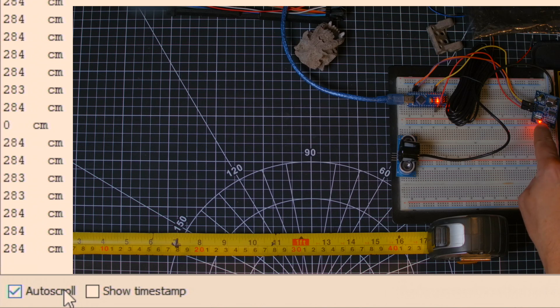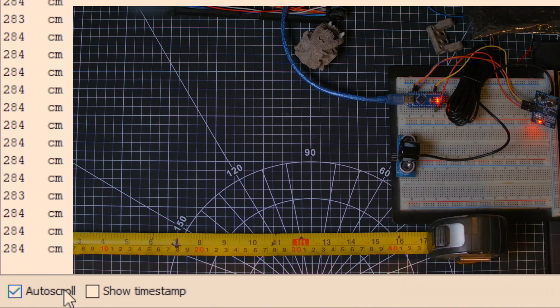And here's my sensor. Now I have a tape measure here. It starts at 40 centimeters all the way to the end. So what I'm gonna do right now, if you look at the serial monitor it says 283 to 84. So I'm gonna put a box, let's say at 35 right here, and it reads 34. That's not too bad actually.